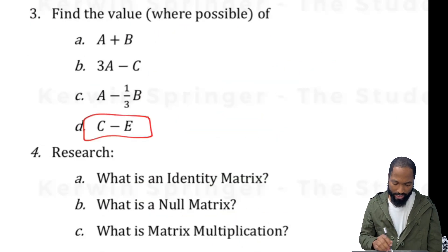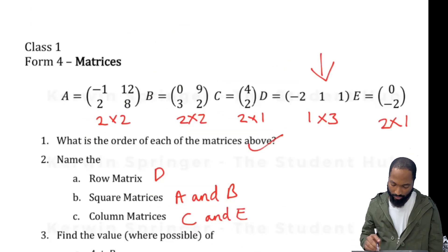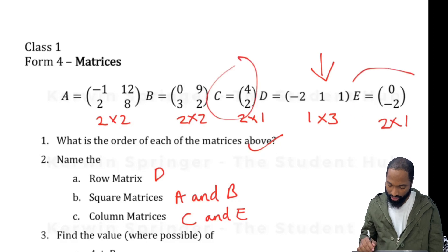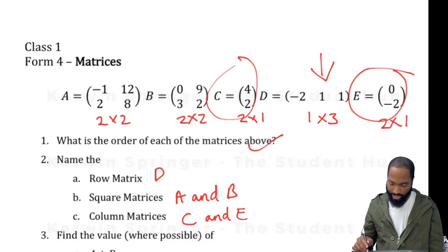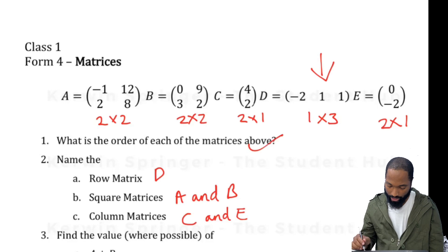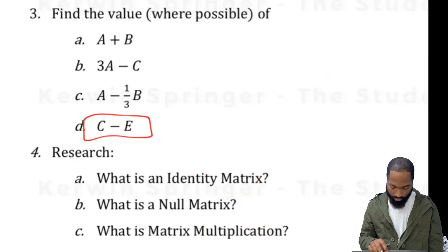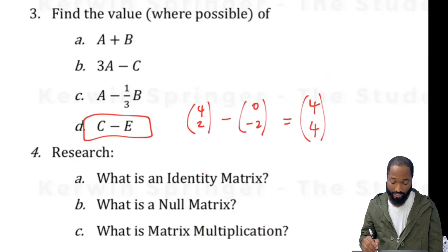Finally, C minus E. Looking at C and E — they actually can work. We get 4, 0, negative 2 and the answer I'm getting is 4.